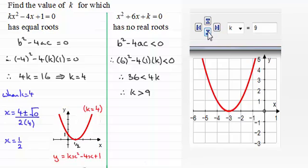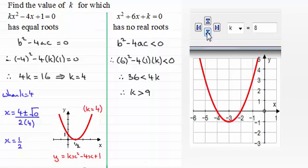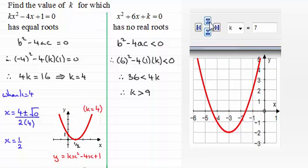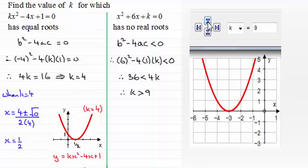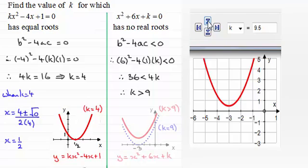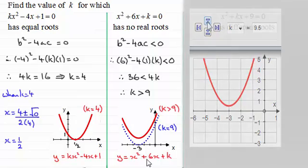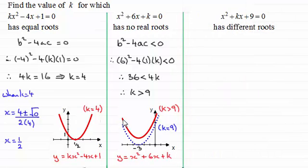When k is less than 9 — now 8.5 — notice how we get two real roots. Bring it down further: 8, still two real roots and so on. So we can see that when k is greater than 9 we end up with no real roots. The graph of y equals x squared plus 6x plus k shows that when k is greater than 9 there are no real roots.